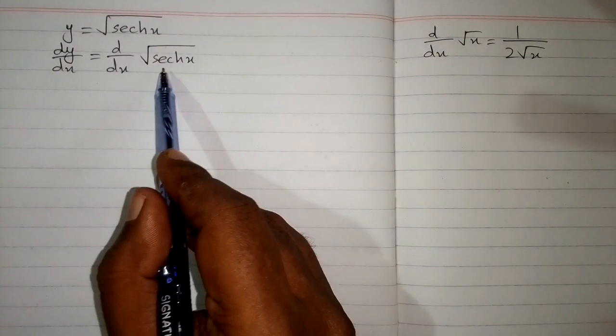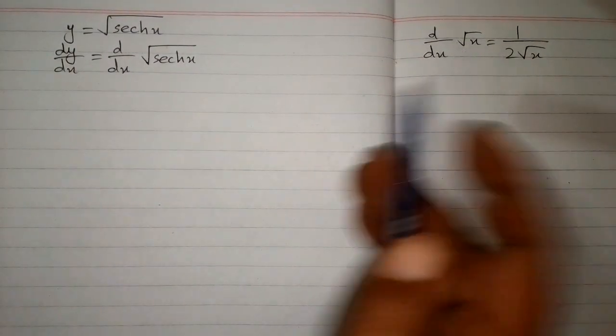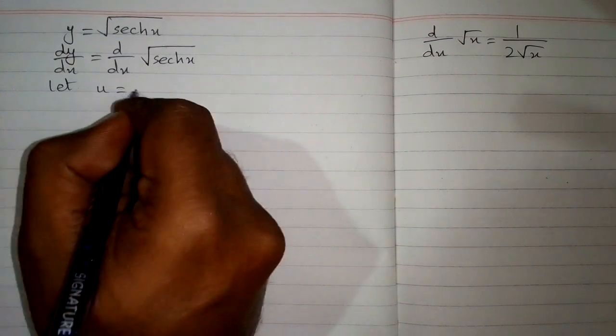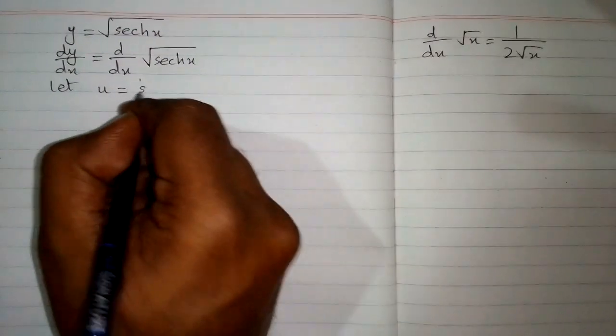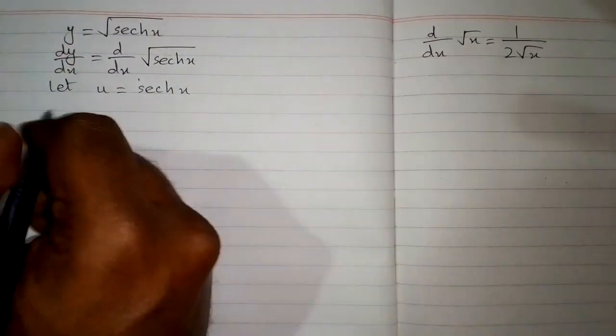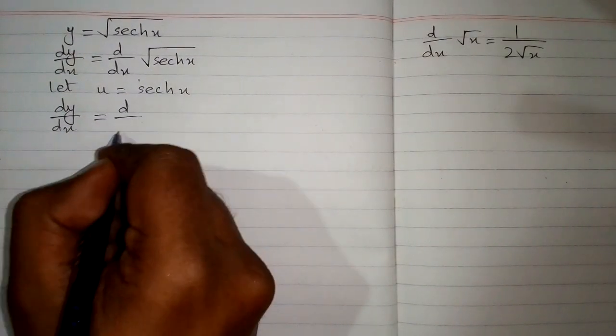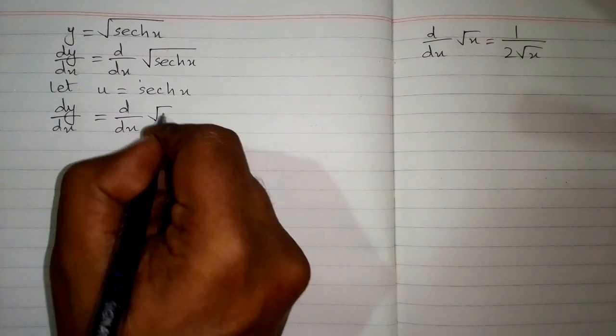And here we have hyperbolic secant x in place of this x. So first we will suppose that u is equal to hyperbolic secant x. So we have dy by dx is equal to d by dx of square root of u.